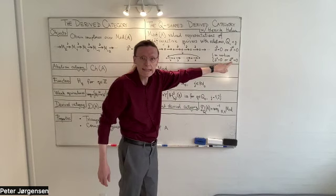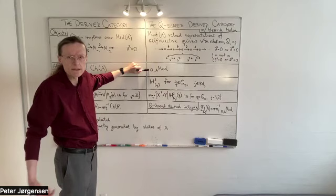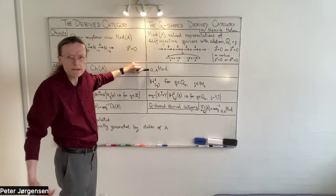So I take a self-injective quiver with relations, I take the category of representations with values in mod A, and Henrik and I denote this by Q mod A, and this is again an abelian category.